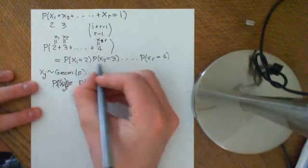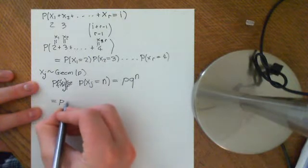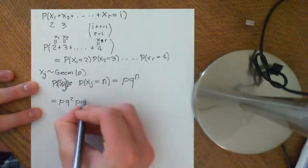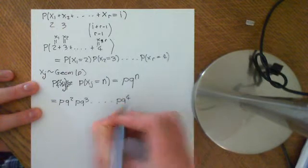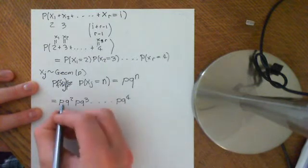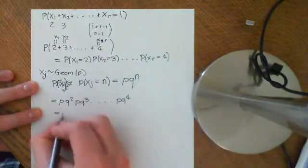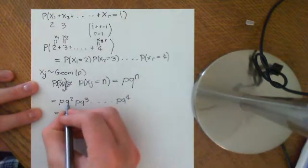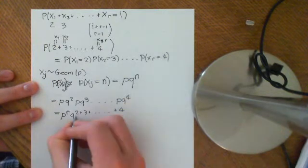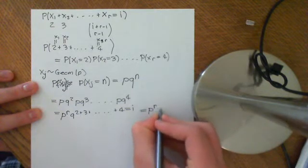So then what we can do is we can fill all of this in. The probability that x1 is equal to 2 is p times q to the 2, then we've got p times q to the 3, and then we go on all the way up to p times q to the 4. Then we can apply the law of indices for exponentials, and we'll get p to the power of r, because it's going to appear in each one of these, and we have r of these, and then we get q to the power of 2 plus 3 plus lots of bits in between plus 4.